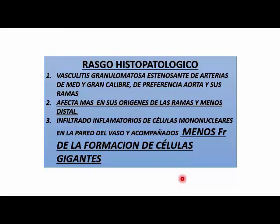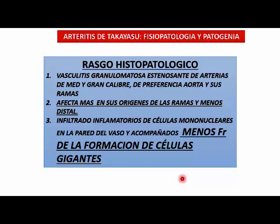Afecta generalmente los orígenes de las ramas más o menos medianas y distales. Tiene infiltrados inflamatorios de células mononucleares generalmente, y en la pared del vaso es menos frecuente la formación de células gigantes que en la arteritis temporal. En la arteritis de células gigantes generalmente hay células gigantes; esa es la diferencia. El compromiso es del cayado, mientras en la anterior es la arteria temporal.